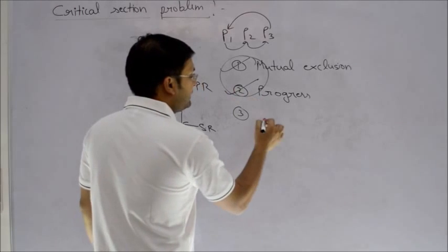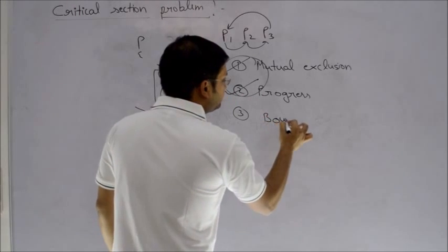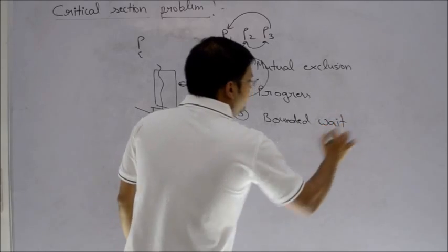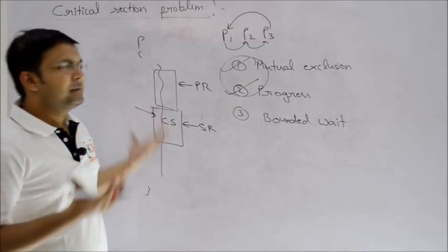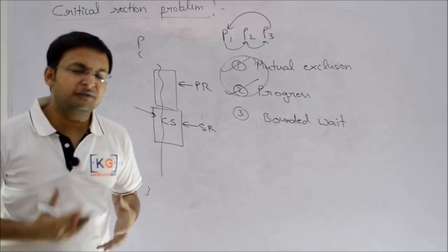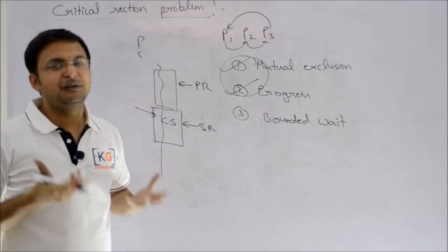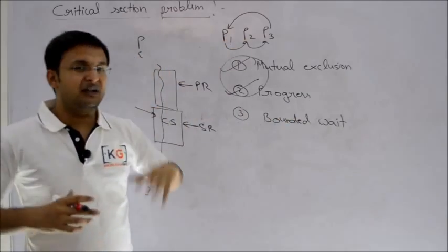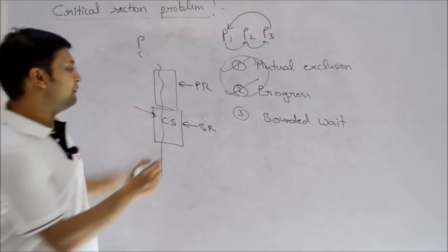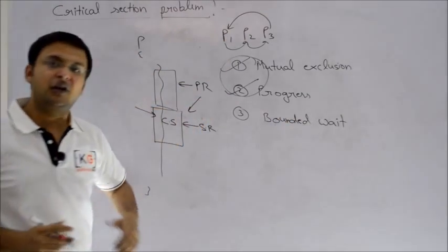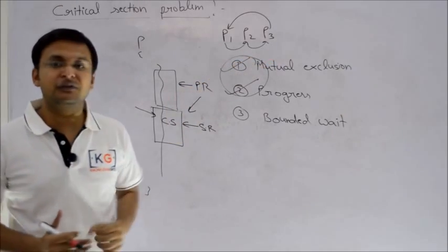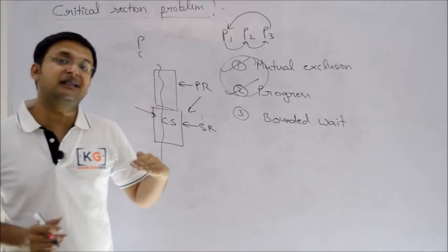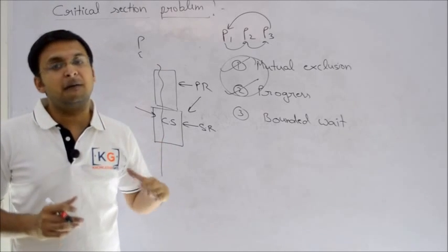And the third and very logical criteria is bounded wait. Operating system is a resource manager, and whenever there is management of something, there will be starvation. Can it happen that a process has requested and has been waiting for a long time to enter into critical section, and it cannot enter? What bounded wait suggests is there must be a maximum bound up to which a process can wait.